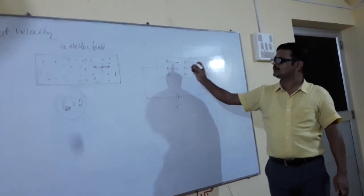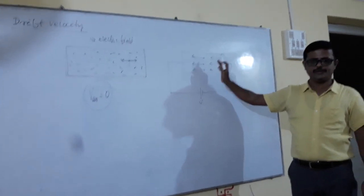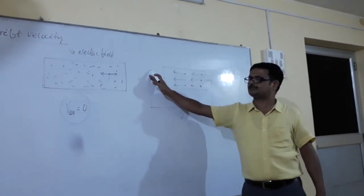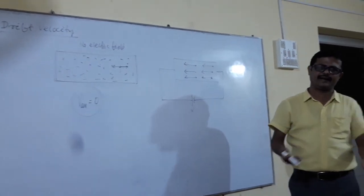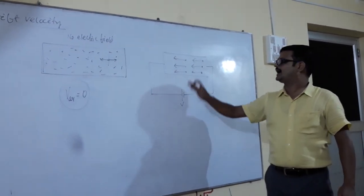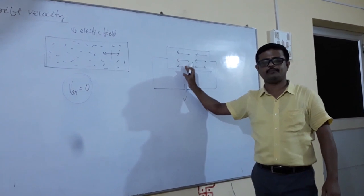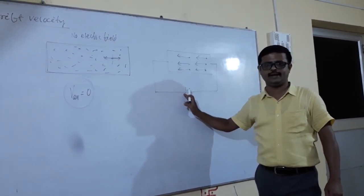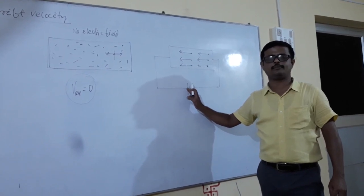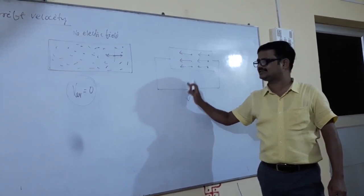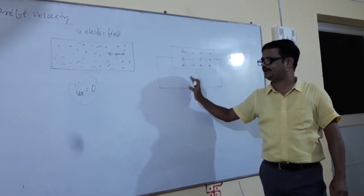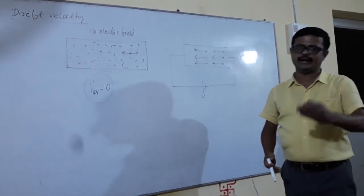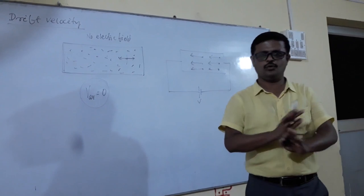So in this case, the average velocity with which the free electrons are moving under the action of an external electric field is called drift velocity. Again I am repeating: the average velocity with which the free electrons are directed towards the positive terminal of the battery under the action of an external electric field is known as drift velocity. In an insulator, no free electrons exist.